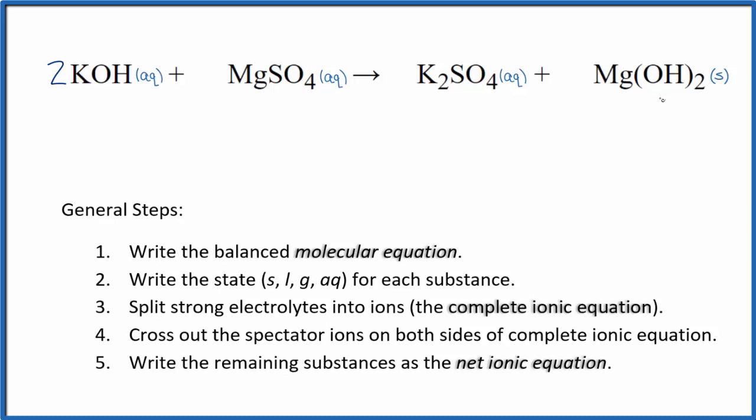Hydroxides in general are insoluble with a few exceptions. Group one hydroxides in particular, like sodium or potassium hydroxide. Magnesium hydroxide is slightly soluble. A very small amount dissolves. So we say that this is a solid and it's a precipitate. It will fall to the bottom of the test tube.